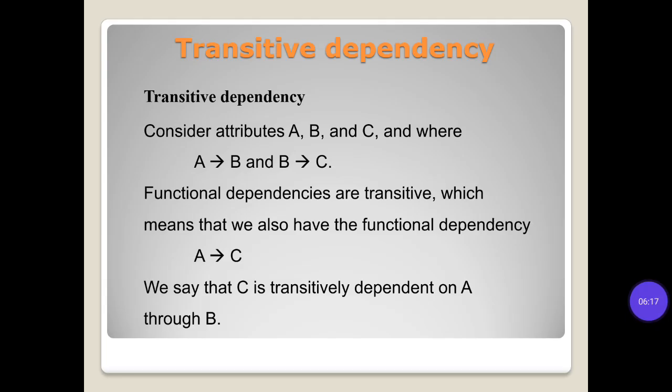Transitive dependency: consider attributes A, B, and C where A → B and B → C. Functional dependencies are transitive, which means that we also have the functional dependency A → C. We say that C is transitively dependent on A through B.